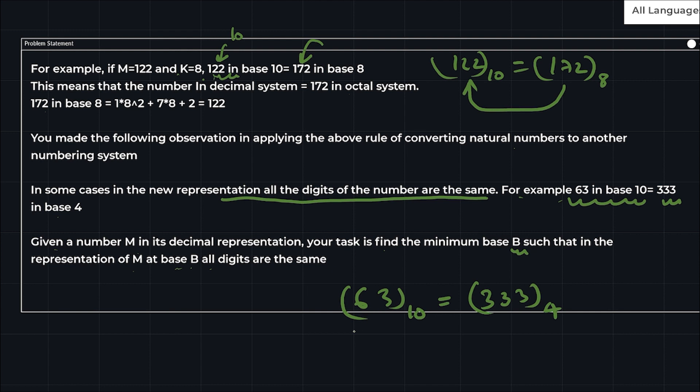Suppose 63 is given and what we need to find is the number in any numbering system, in any base, but it should be minimum base and the number should have all digits the same. See, triple 3, all 3s are same and we got it in base 4. I think base 2 and base 3 will not have identical digits, so we got it in 4.